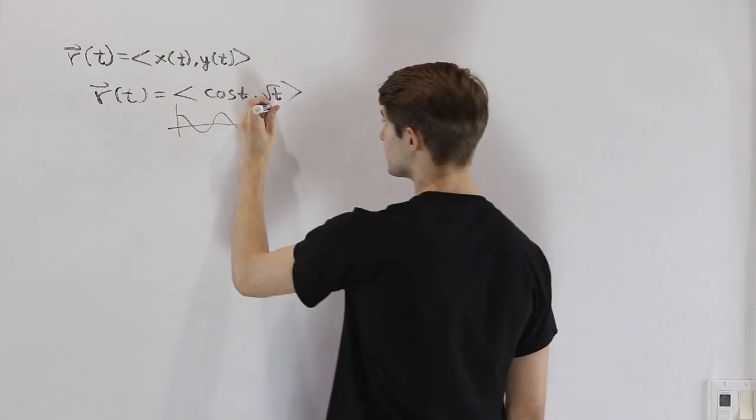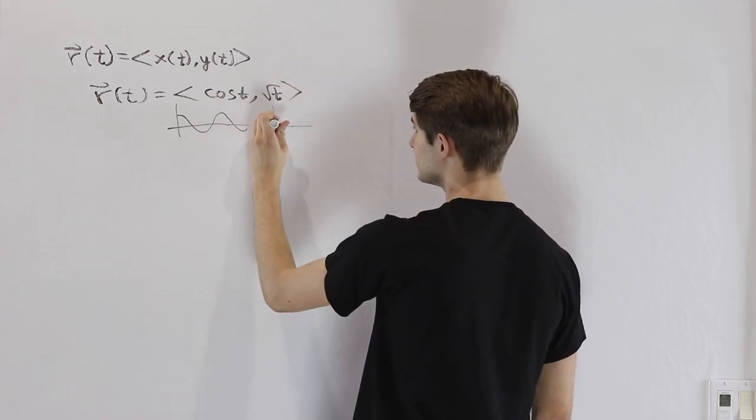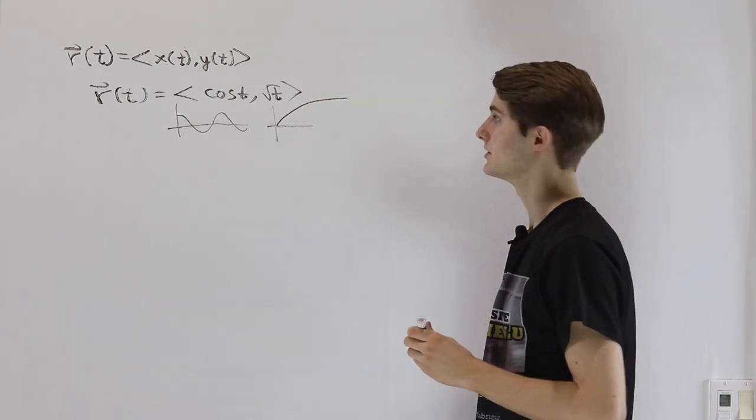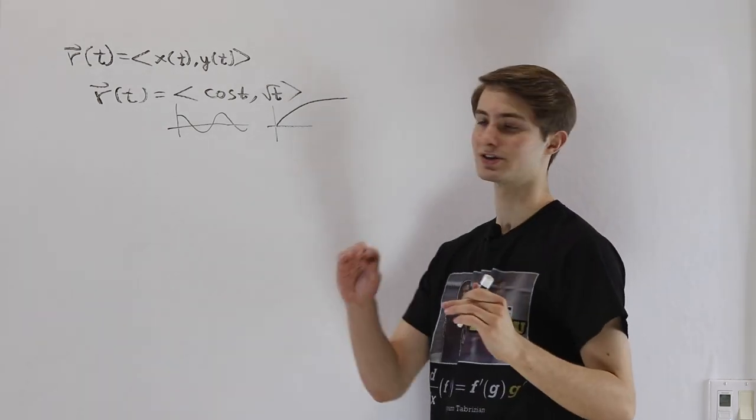On the other hand, the square root of t is going to start at 0 and it's going to increase up, but it's going to start to level off as time increases because that square root function starts to slow down.